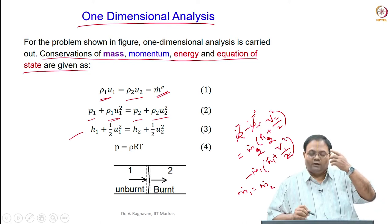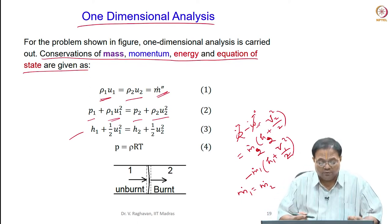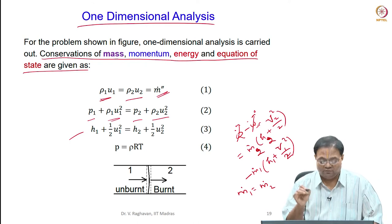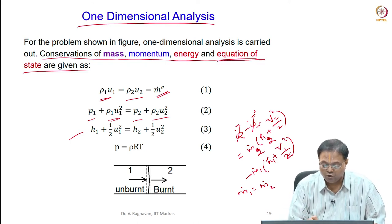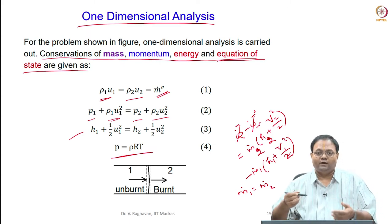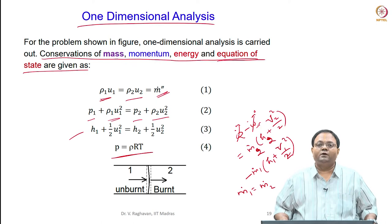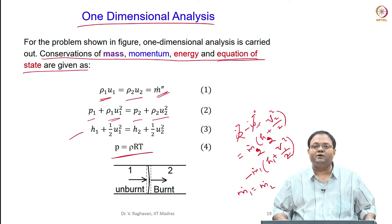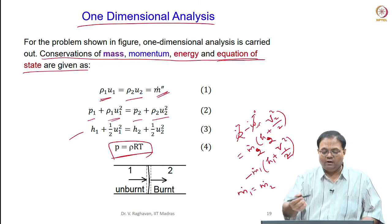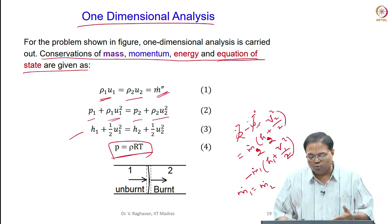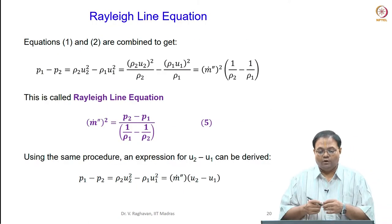The enthalpy h accounts for combustion implicitly. The equation of state is also important — based on temperature and pressure we can get the value of density. So we write the equation of state as P = ρRT. These are the fundamental governing equations.